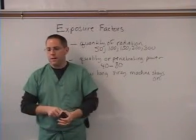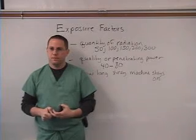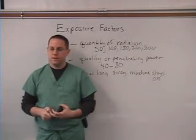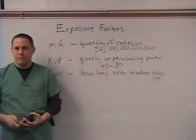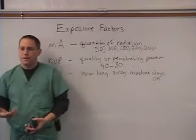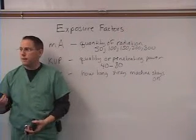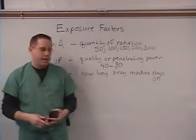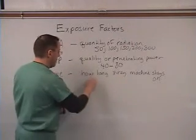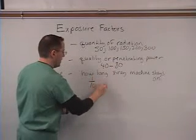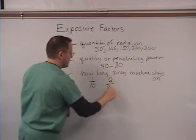For a thicker body part, you're going to need a higher KVP. The third number that you set is your time. For each x-ray, you have to set the time, and it's usually a very short amount — for example, a fraction like one-tenth of a second, or even two-twentieths.